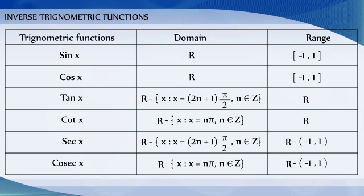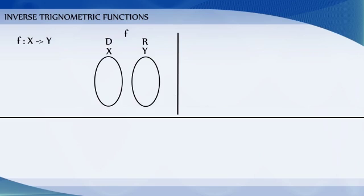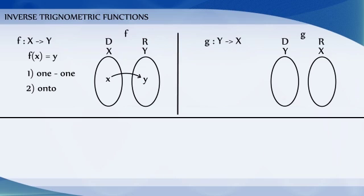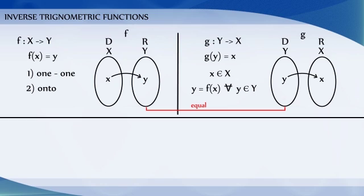We also learnt in earlier classes that if f is a function from X to Y such that f(x) = y is one-to-one and onto, then we can define a unique function g from Y to X such that g(y) = x, where x belongs to X and y = f(x), for all y belonging to Y. The domain of g is the same as the range of f, and the range of g equals the domain of f.